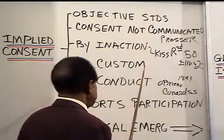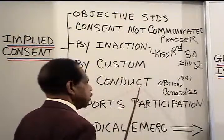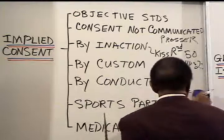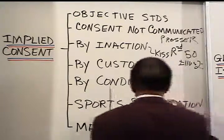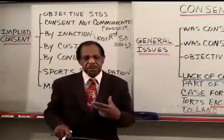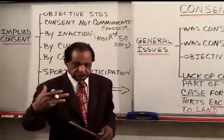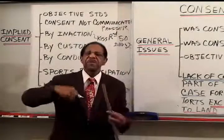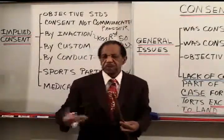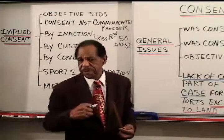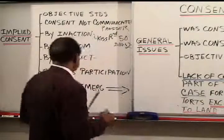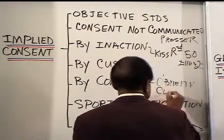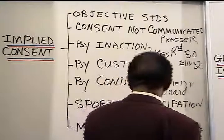The custom umbrella case is not from any particular source. The conduct case — the vaccination case — is where the woman by conduct held her arm up. The SS Cunard was bringing people into the United States for immigration purposes in 1891 and all these people needed to be vaccinated. This woman didn't want to be vaccinated but ultimately held her arm up and the court said that's consent by conduct. That case is O'Brien v. Cunard.